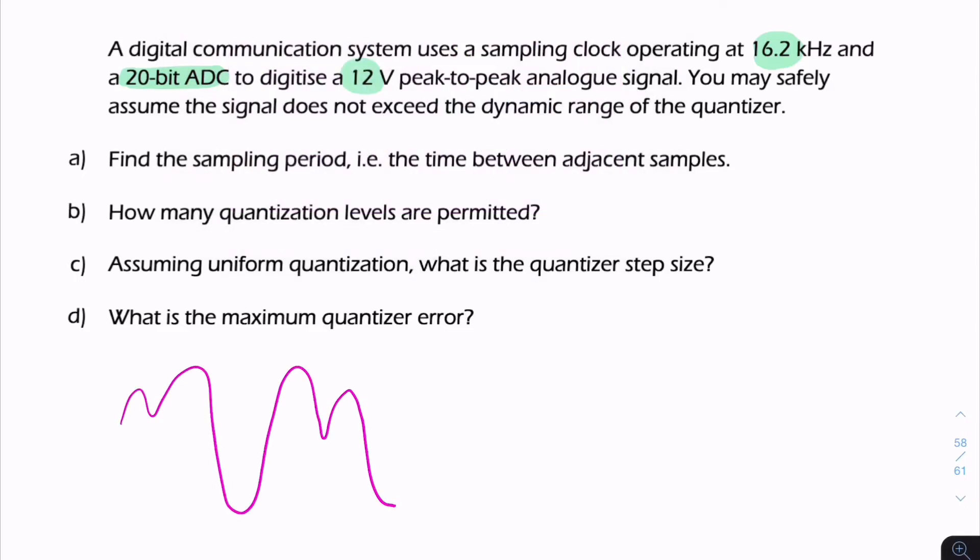The signal has a peak-to-peak voltage of 12 volts, and we may safely assume the quantizer has a dynamic range that matches that 12 volts. There are a number of questions asked about this. The first question is: what is the sampling period?